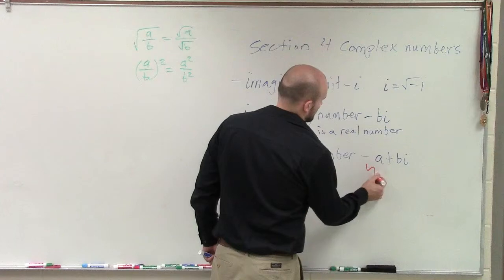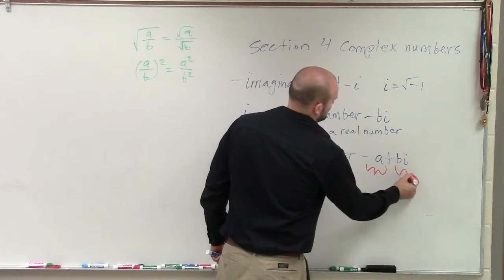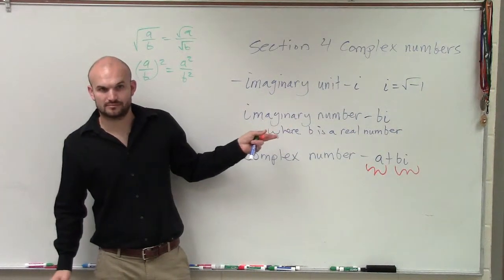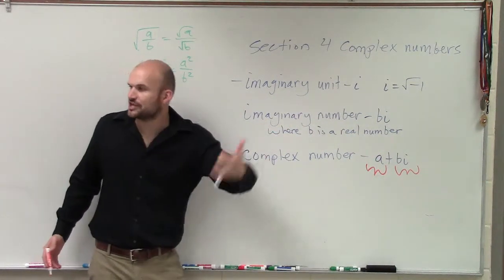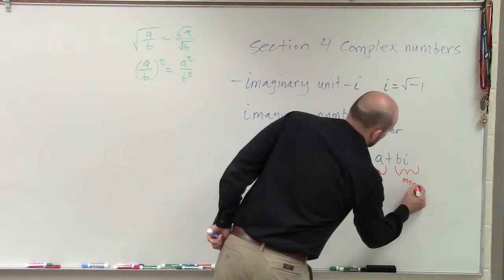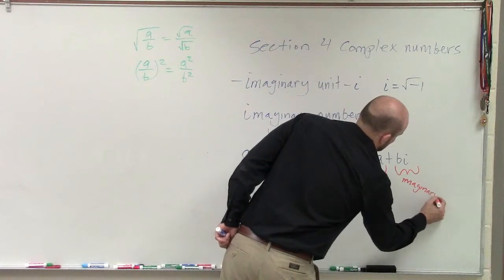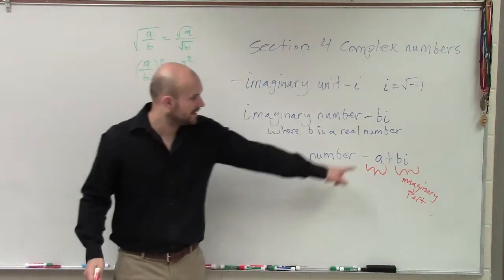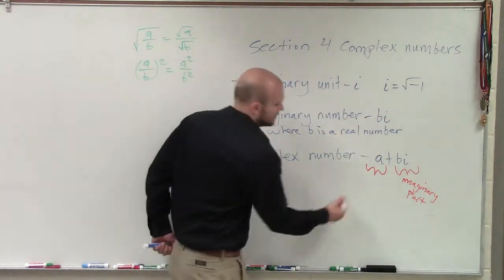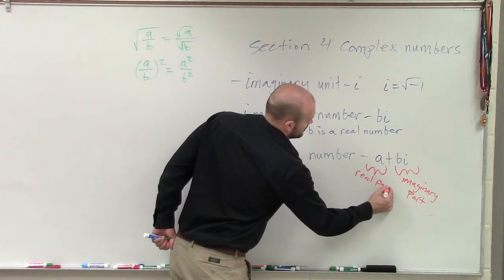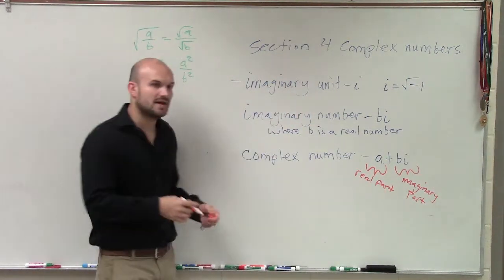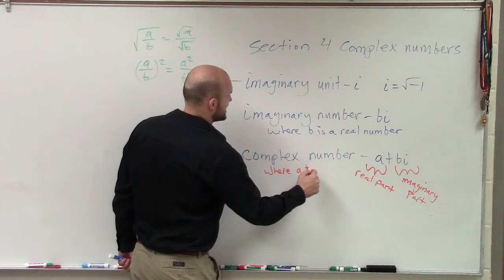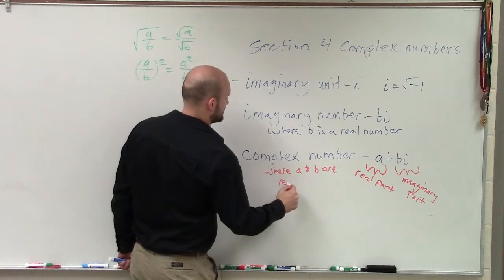We have a and we have bi. Well, we know bi is an imaginary number. So we call that like the imaginary part of the complex number, or the imaginary number of a complex number. And then the A is going to be your real part. But it's important for complex numbers to understand that in this case, A and B are real numbers.